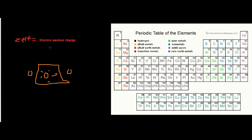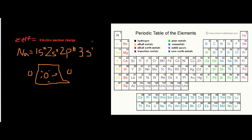For example, if you write the electronic configuration of sodium it is: 1s², 2s², 2p⁶, 3s¹. The highest principal quantum number here is 3, so 3s¹ is the valence electron. Anything below that — 1s², 2s², and 2p⁶ — are the core electrons.